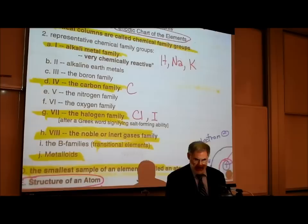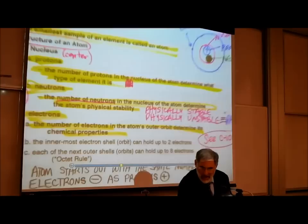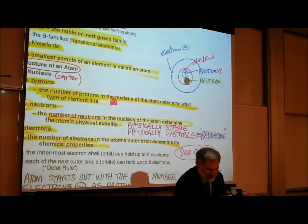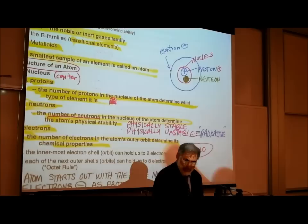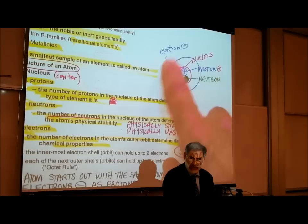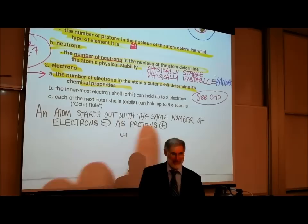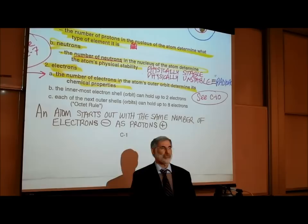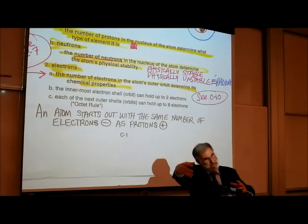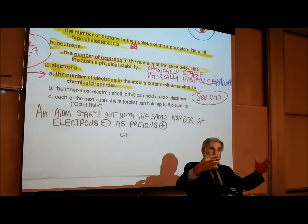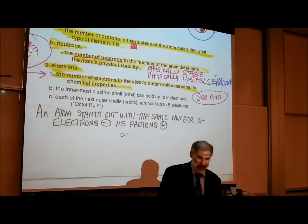Back on C1: these electrons circle around the nucleus of the atom. An atom normally starts out with the same number of negatively charged electrons as the number of positively charged protons. So if an atom starts out with the same number of negative charged electrons as positive charged protons, then that atom is electrically neutral. But it only starts out that way — it may not remain that way.